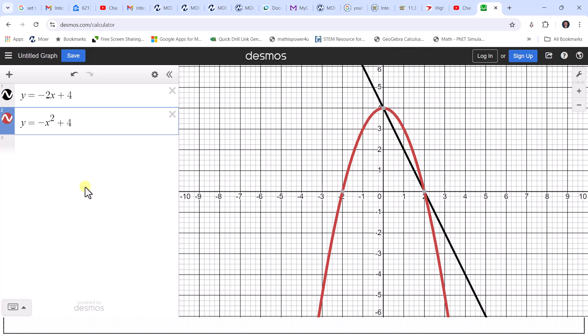And we have the graphs for both equations on the coordinate plane. We can see there are two points of intersection and therefore the system has two solutions. One solution is the ordered pair zero comma four or x equals zero and y equals four. The other solution is the ordered pair two comma zero or x equals two and y equals zero.